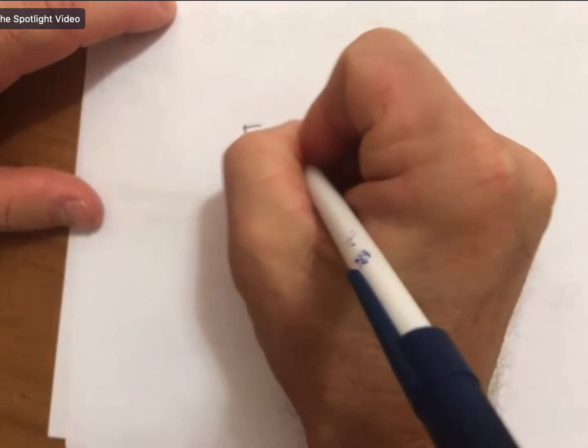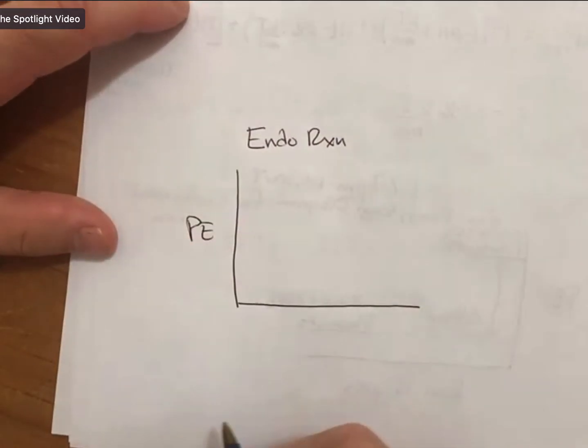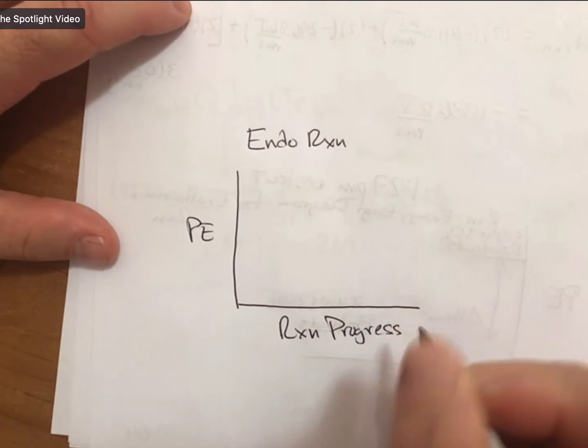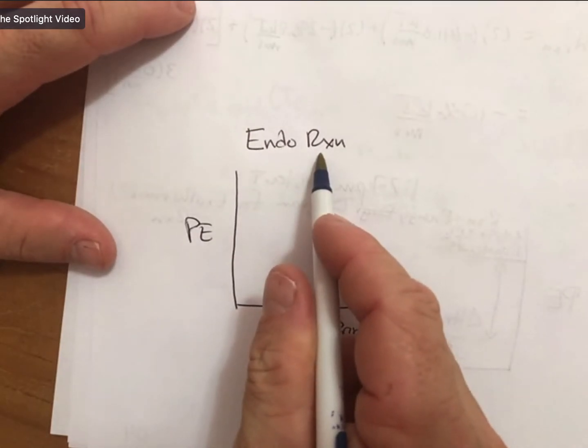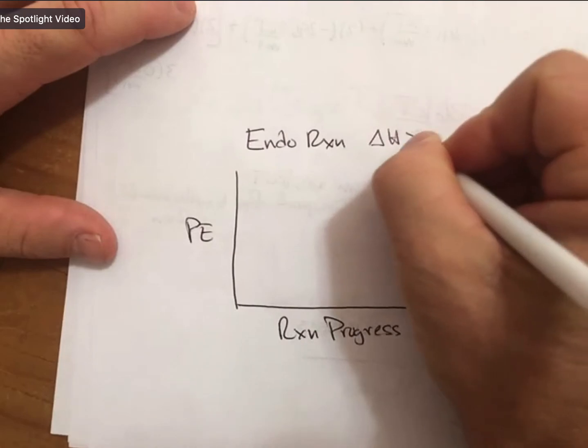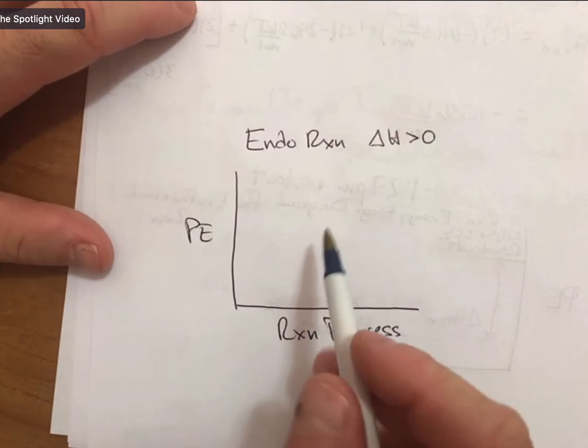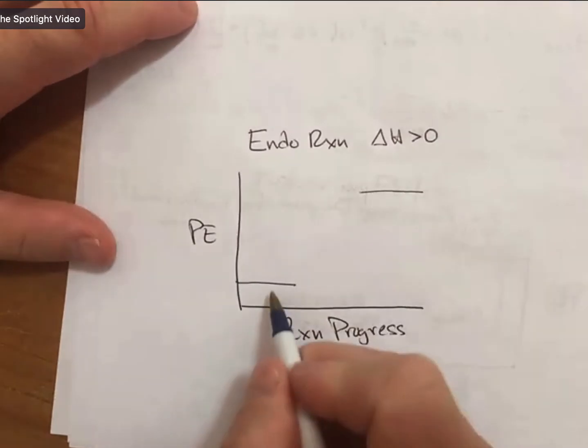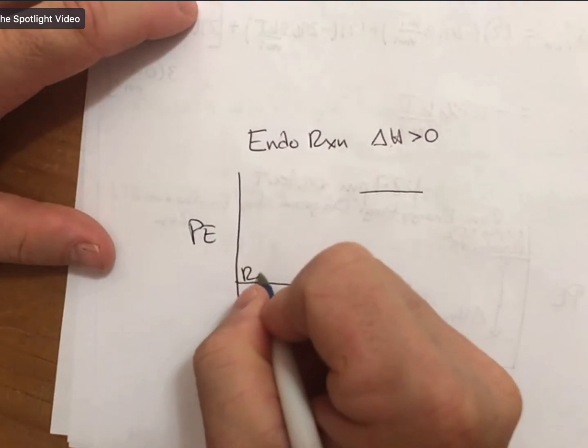I'll do it on the back of this piece of paper. So this is for an endothermic reaction. The axes are the same, but what happens is for an endothermic reaction, delta H is greater than zero. Delta H greater than zero means that the products minus the reactants must be a positive number, and so my reactants are down here.